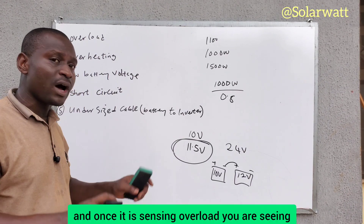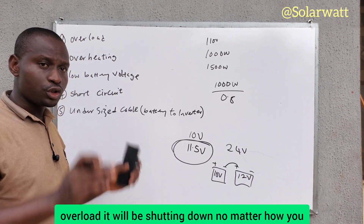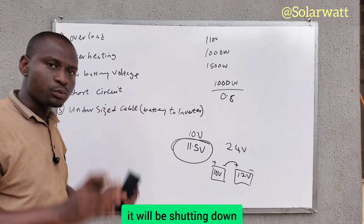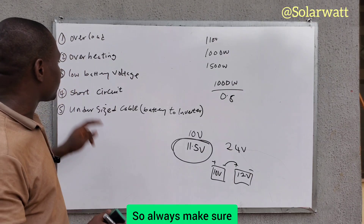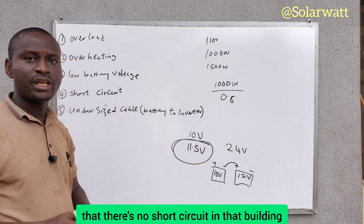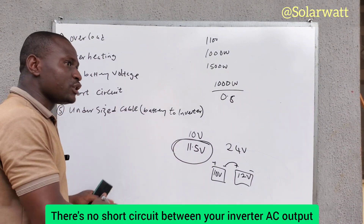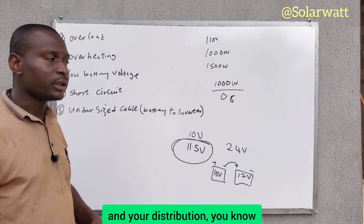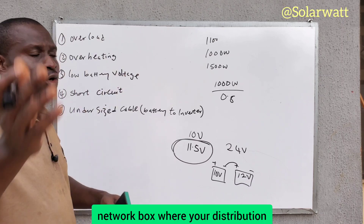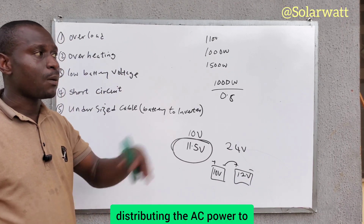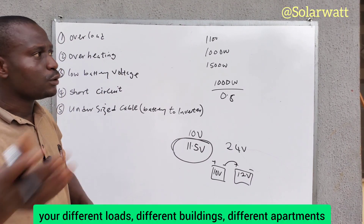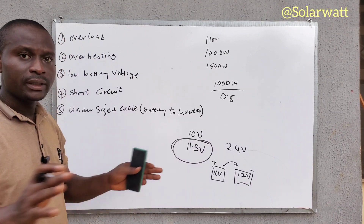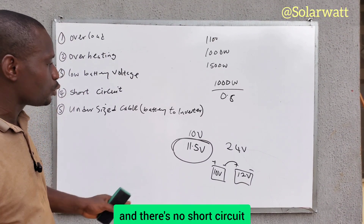Once the inverter is sensing overload and showing overload, it will shut down no matter how many times you restart it. Check the circuit breakers, fuses, and distribution box in the building to ensure there is no short circuit, because short circuit causes the inverter to detect overload. Always make sure there is no short circuit in the building or between your inverter AC output and the distribution network supplying AC power to your different loads and apartments. Confirm the circuit is okay and there is no short circuit.